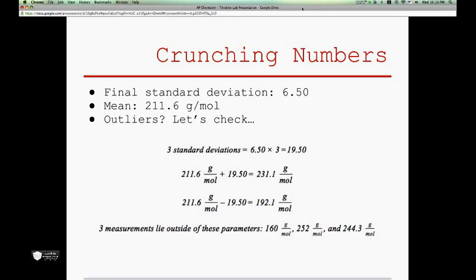When calculated, the final standard deviation was 6.50, and its mean was 211.6 grams per mole. Then, when the data was checked for outliers using the 3S rule, benches 25, 26, and 27 were confirmed as outliers and were thus removed.